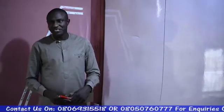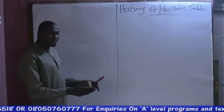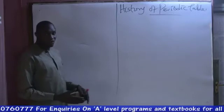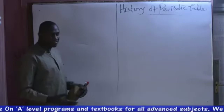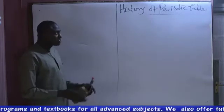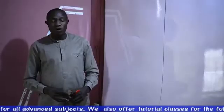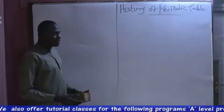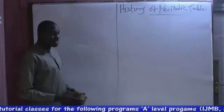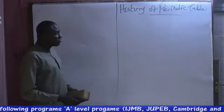However, as at the 18th century, about 55 elements had been known. And the problem scientists had then was how to arrange these elements in order to make it easy for students to understand. The only thing that was common to the elements, apart from symbols, was the atomic weight, because the atomic number had not yet been discovered.